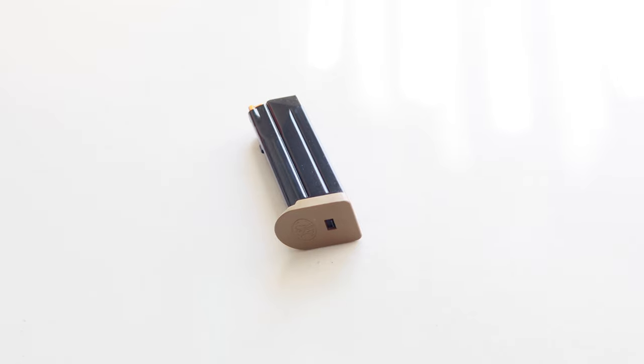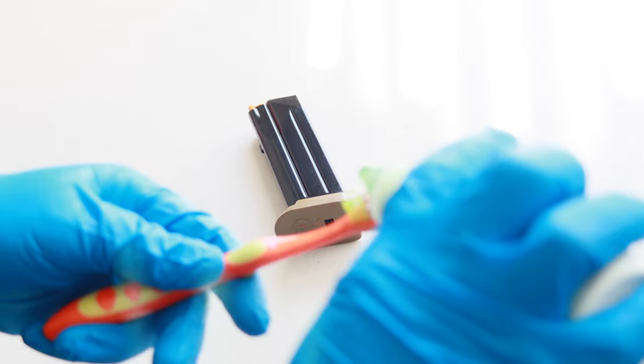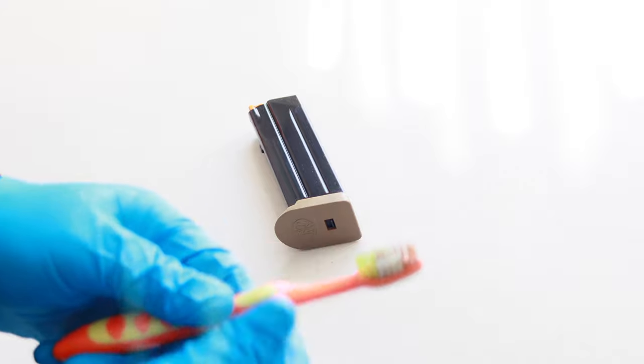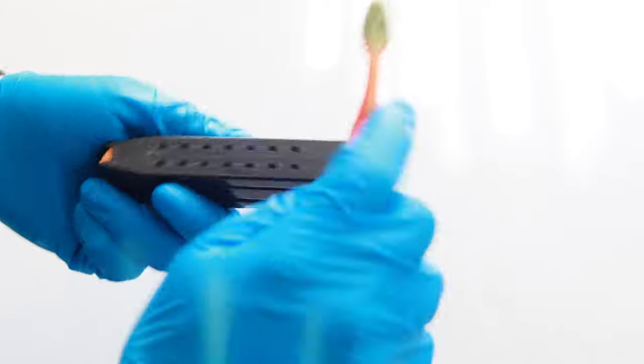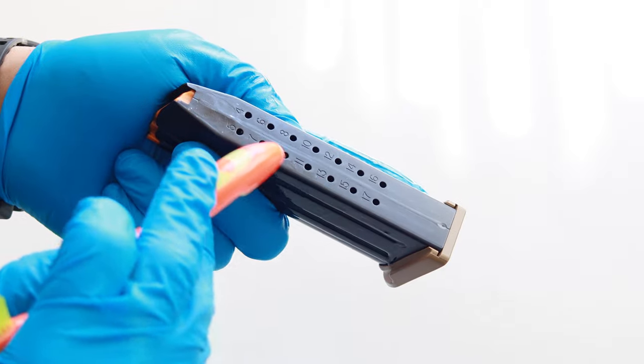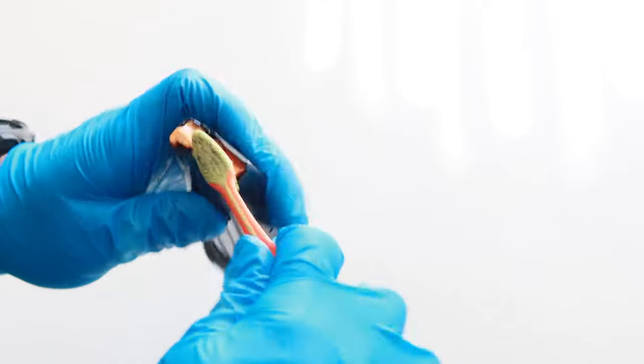Now I'm going to clean the magazine. I'm going to add CLP to a nylon brush and start scrubbing the outside. But I'm only going to add a little CLP because I don't want anything leaking down into the magazine. You can see that there are plenty of places where CLP can leak into the magazine if you're not careful. That orange piece at the top is the follower. Make sure you scrub that really well on top of it and around it. It's not necessary to break down the magazine every time you clean it.